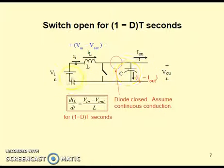Applying KVL to this, we will have VIN minus VL minus Vout equal to 0. So VL is equal to VIN minus Vout, and based on that you could derive this equation.